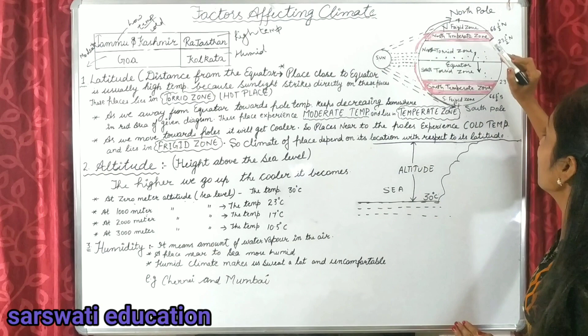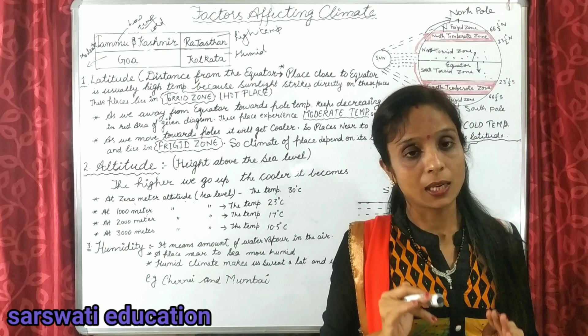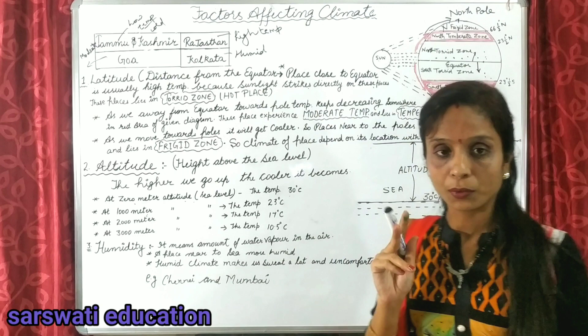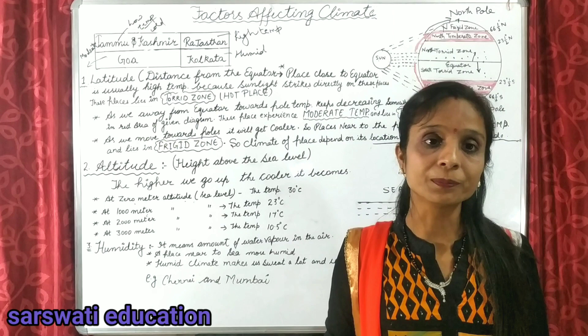This type of zone is known as the temperate zone. In the temperate zone, the temperature is not very high and not very cold. We have two temperate zones — the northern temperate zone in the northern hemisphere and the south temperate zone in the southern hemisphere.